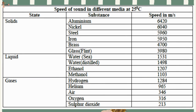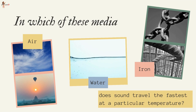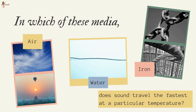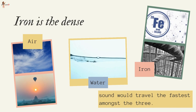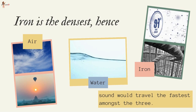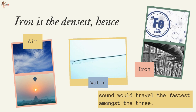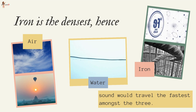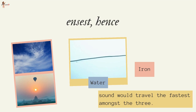The speeds of sound at a particular temperature in various media are listed. Among the three media — air, water, or iron — sound travels fastest in iron at a particular temperature, as it is the densest.